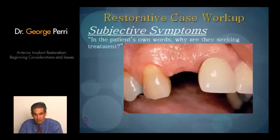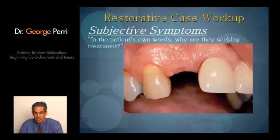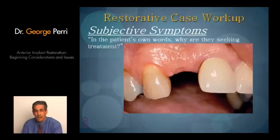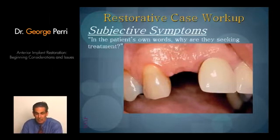But like with the posterior quadrants, I think we need to find out why that patient is in our chairs. In their own words, why are they seeking treatment? Why did they lose the tooth? Why are they resistant to maybe one type of treatment? And then that helps guide us towards implants.